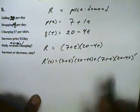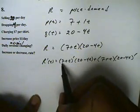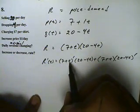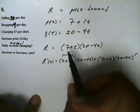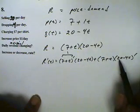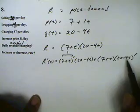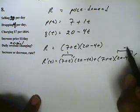Alright, now the derivative of this: the derivative of 7 is 0 and the derivative of t is 1, so all we get out of this is 1. The derivative here, 20 is 0, the derivative of negative 4t is negative 4, so this is negative 4.